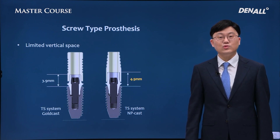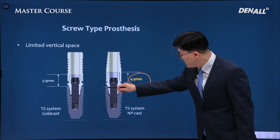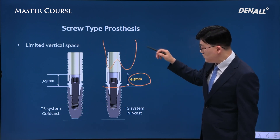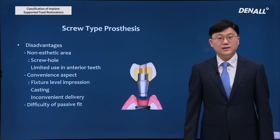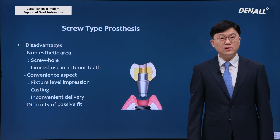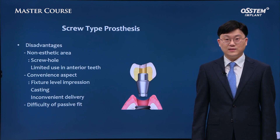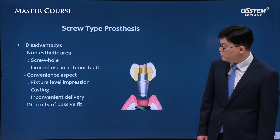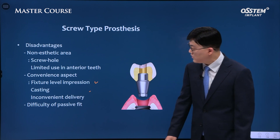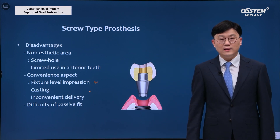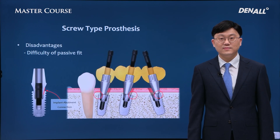For the TS system screw type prosthesis, the minimum distance where this can be used is 4.5 mm from the implant to the antagonist. The downside of screw type prosthesis is that the screw hole should not face the aesthetic zone. Also, because the abutment and crown are made as one, the screw needs to be adjusted as try-in is performed, so upon delivery it can be very cumbersome. Additionally, implant-level impression needs to be done, and because casting is involved, there can be errors. Without cement, it is difficult to get passive fit compared with cement type.